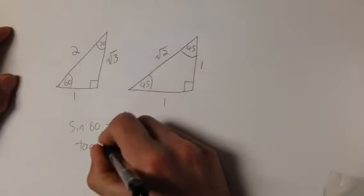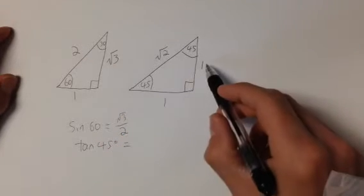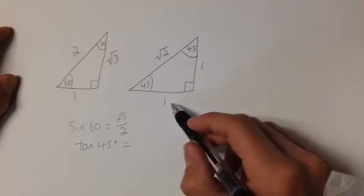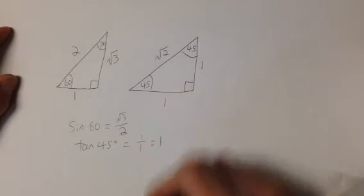As another example, the tan of 45 degrees is opposite over adjacent. Opposite is 1, adjacent is 1, so the tan of 45 degrees is equal to 1.